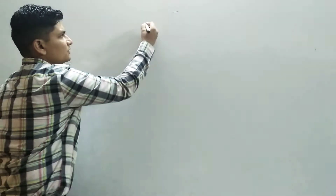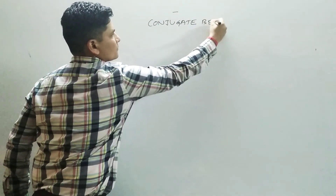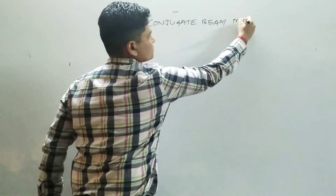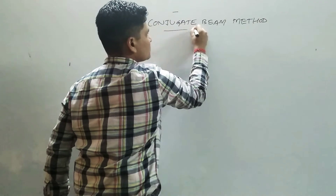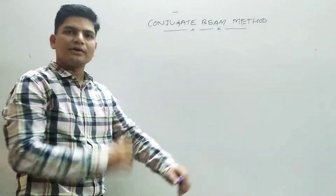There are two Mohr's theorems. Mohr's theorem 1 states that if you need to find the slope at any point in the given actual beam, it is equal to the shear force in the conjugate beam. Mohr's theorem 2 states that the deflection at any point in the actual beam is equal to the bending moment in the conjugate beam. These are the two basic concepts on which the conjugate beam method is applied.